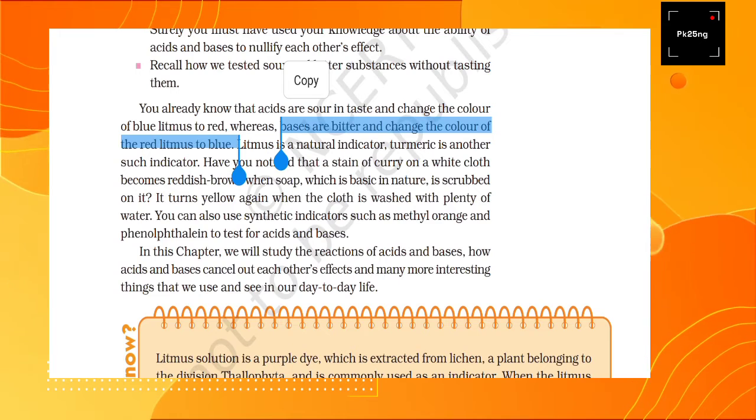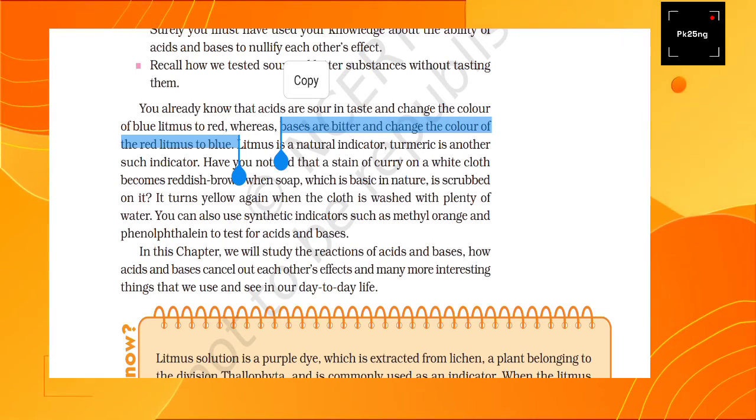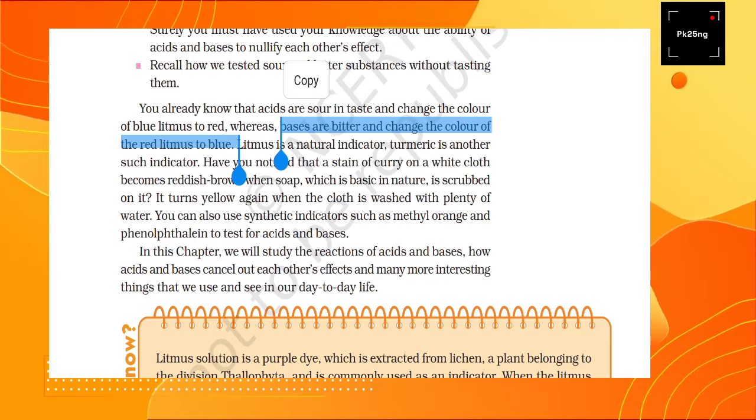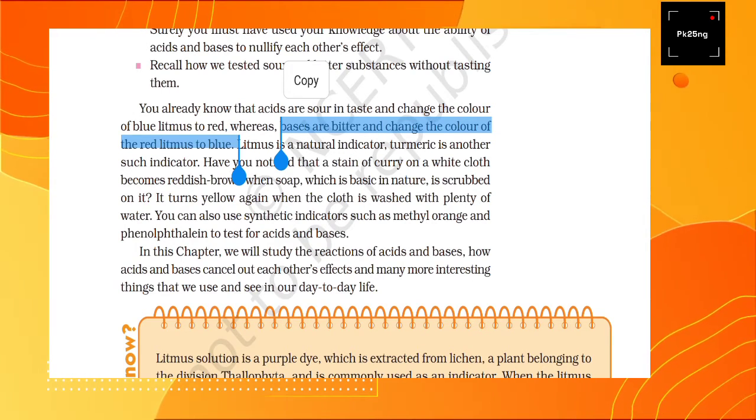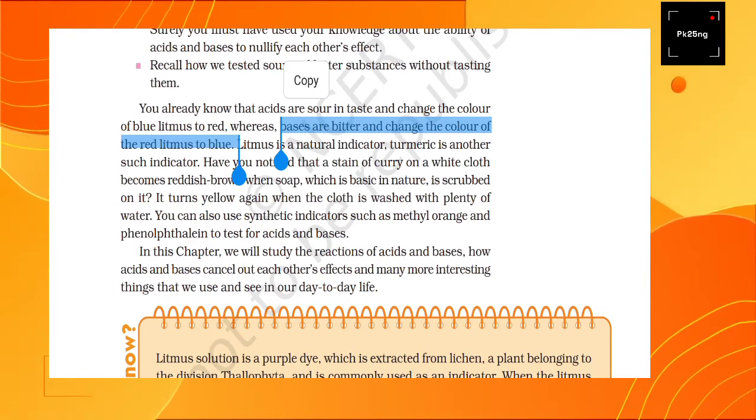Turmeric is another such indicator. There are two ways that you can do for acid and base identification. One is litmus and the other is turmeric. You will know these two different things, the two ways which are indicators.